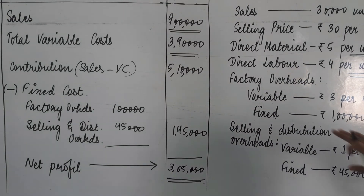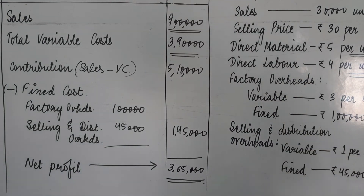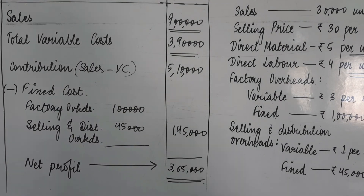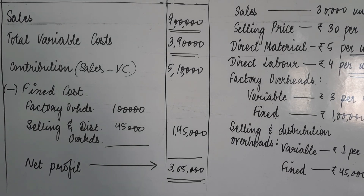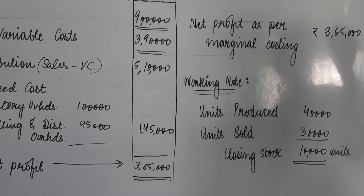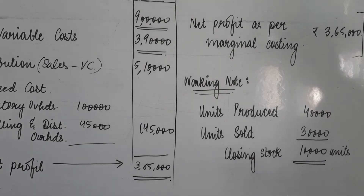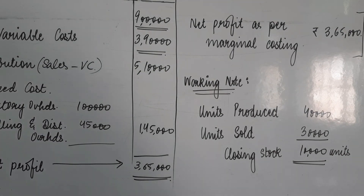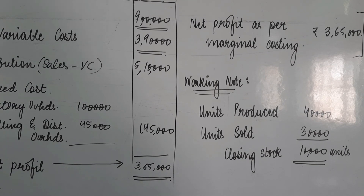Fixed expenses humne yahan par adjust kiya hai. Ab aapko apna answer conclude karna hai at the end. Ek working note banega about the number of units jo humne closing stock ke liye use kiya hai. You can draw it within the income statement itself or prepare a separate working note for the same. Try to solve this question on your own. Thank you so much.